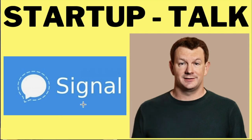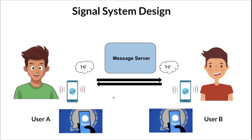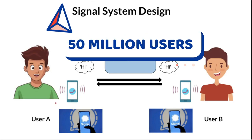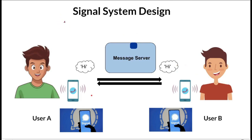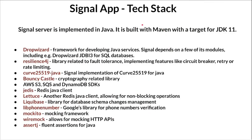After WhatsApp was acquired by Facebook, Brian Acton left and started his own application, making Signal open source. Signal encrypts each and every message from user A to user B — even if you want to turn it off, you cannot. It's always encrypted. Currently it has 50 million users. Internally it uses TCP/IP for sending messages — text, files, images, voice messages, and videos — and you can also create group chats and share photos and videos.